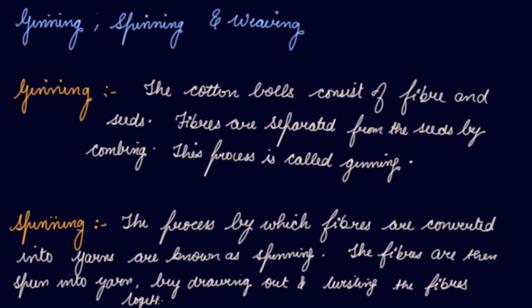What you do is you draw out the fibre and then spin it into yarns by drawing out and twisting the fibres together, and you get the yarn out of it. Traditionally the spinning was done by charkha or takli. Now machines are basically used in spinning.